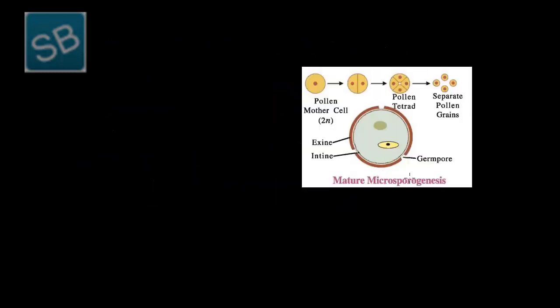This figure depicts the mature microsporogenesis process. As said earlier, due to the development of the anther, a microspore tetrad is formed. This microspore tetrad undergoes meiotic division and is formed into mainly four structures that are liberated from one another. Each sub-structure is known as a pollen grain, which gets gradually separated from the others due to divisions.